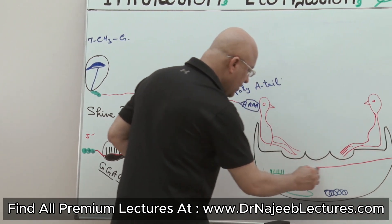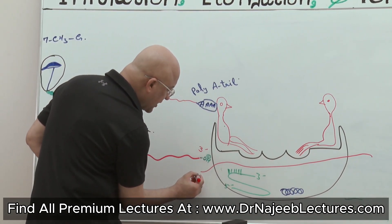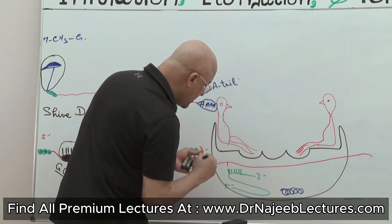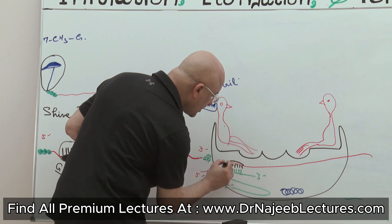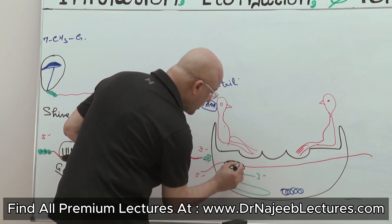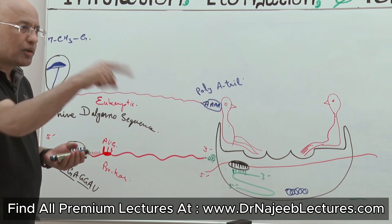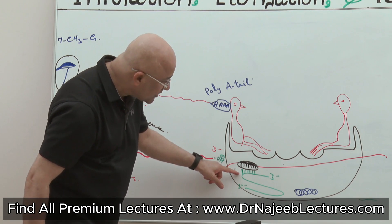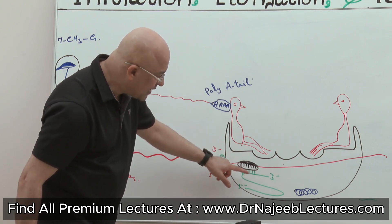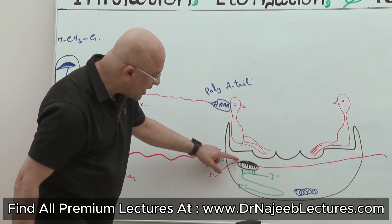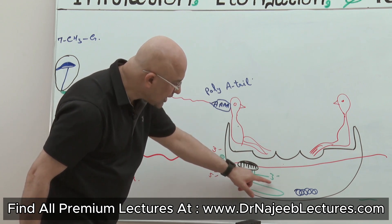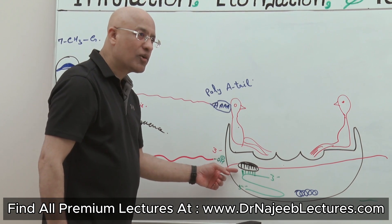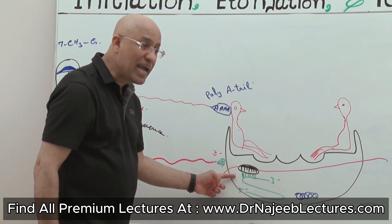When the messenger RNA comes over here — this is the messenger RNA, this is its 5' end — the Shine-Dalgarno sequence, which is present in bacterial messenger RNA, base-pairs with the sequence present in the 16S ribosomal RNA near the 3' end of the ribosomal RNA and near the 5' end of the messenger RNA. Both of them attach with each other via complementary base pairs with hydrogen bonds, and they are anti-parallel.